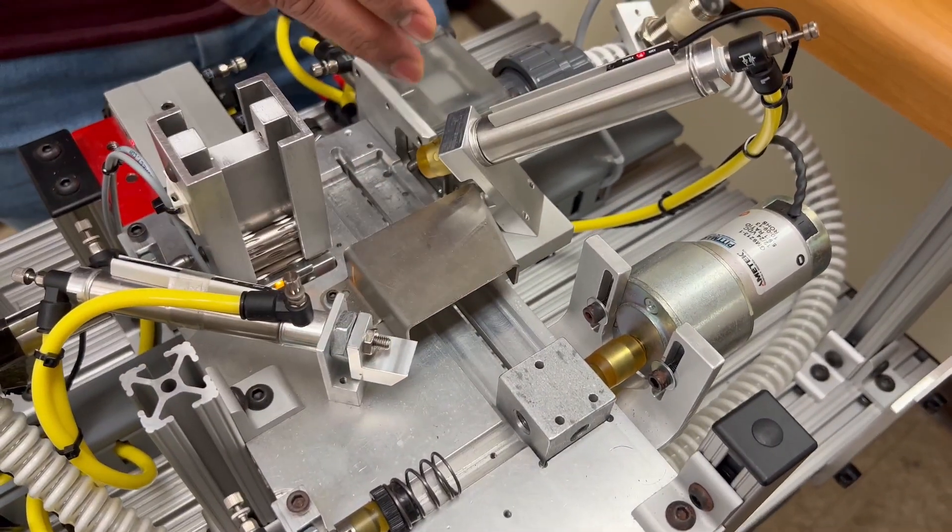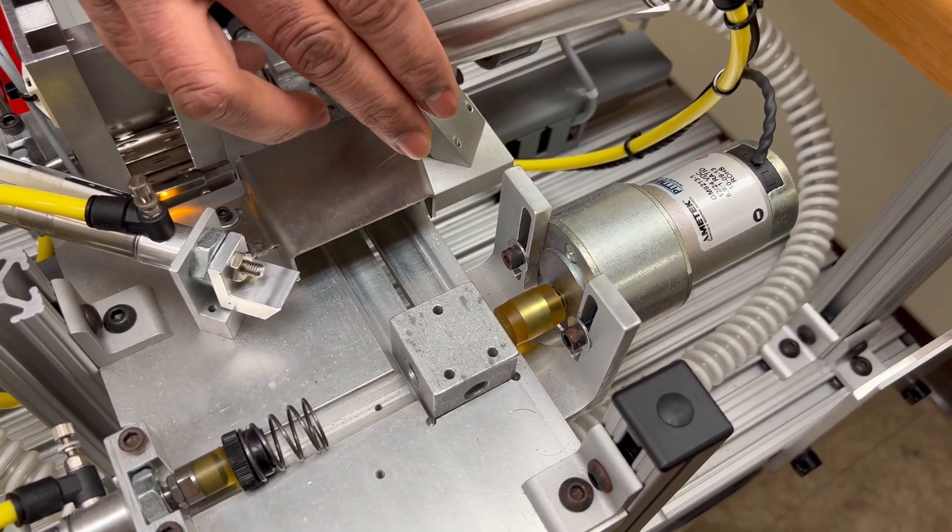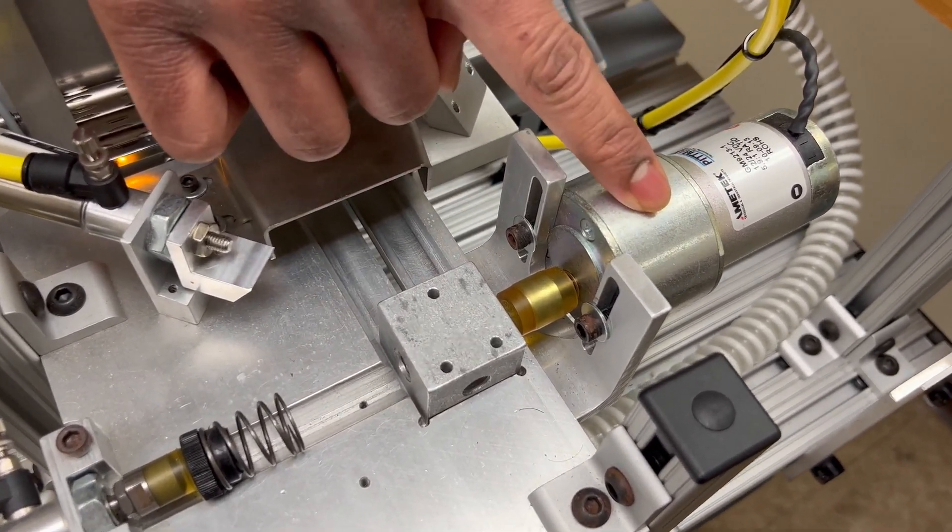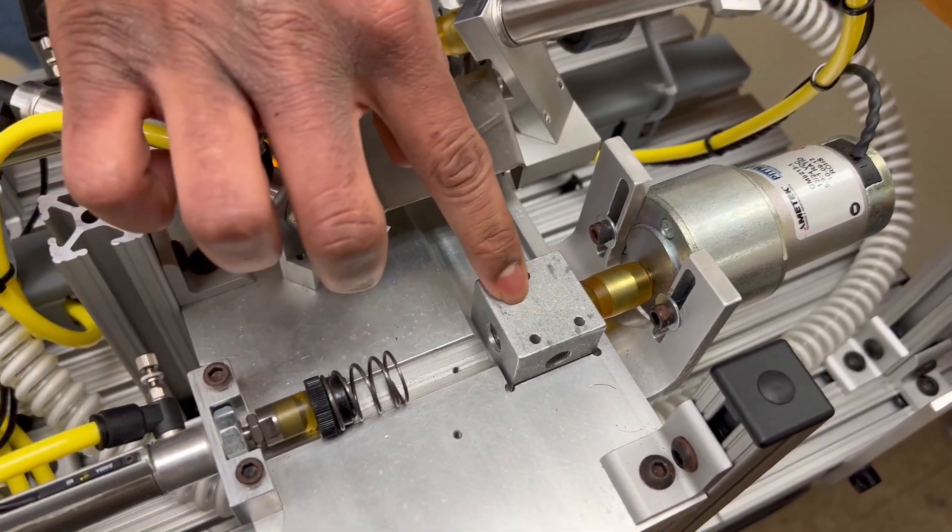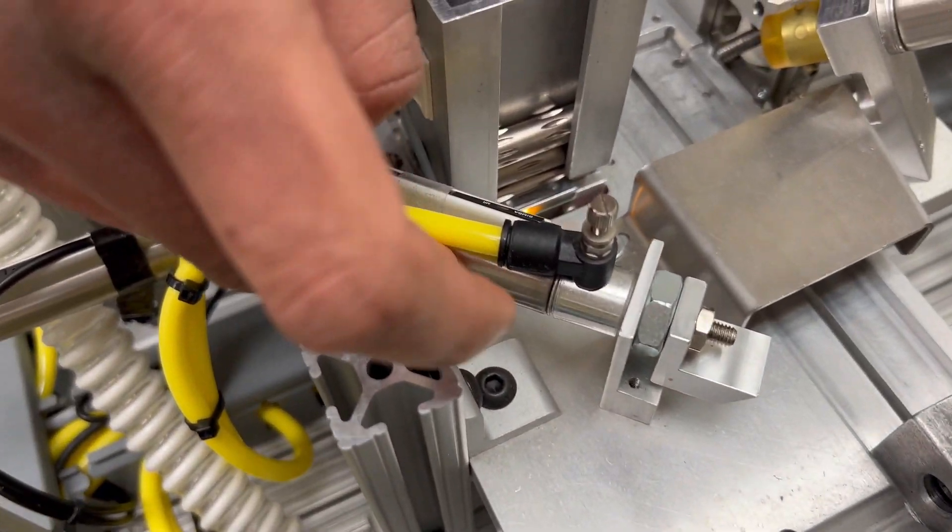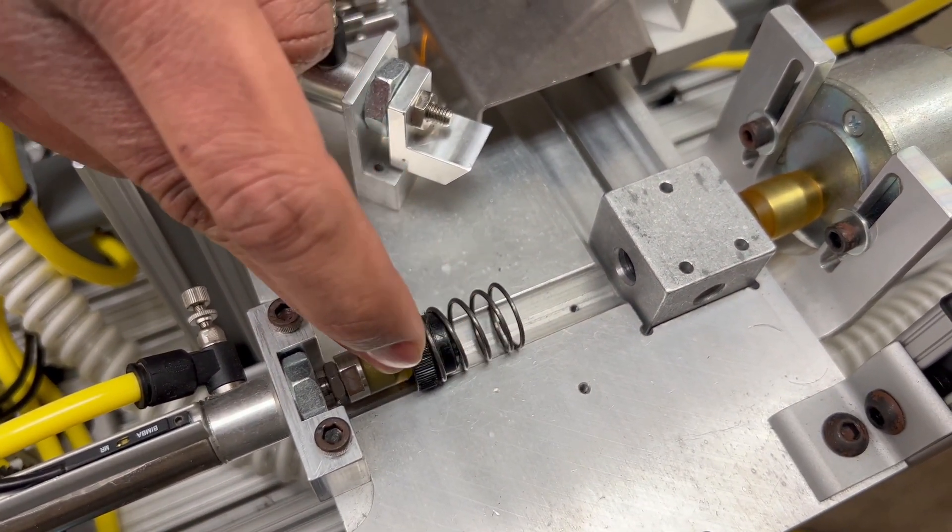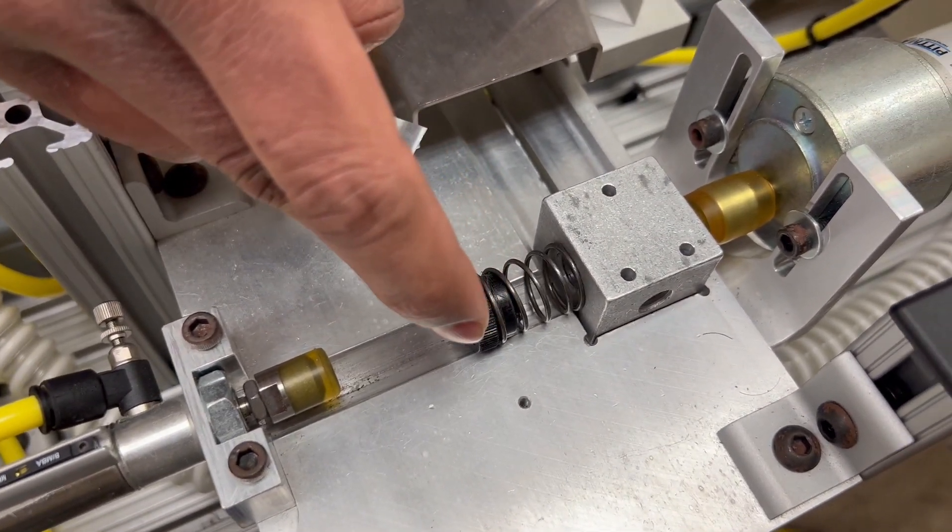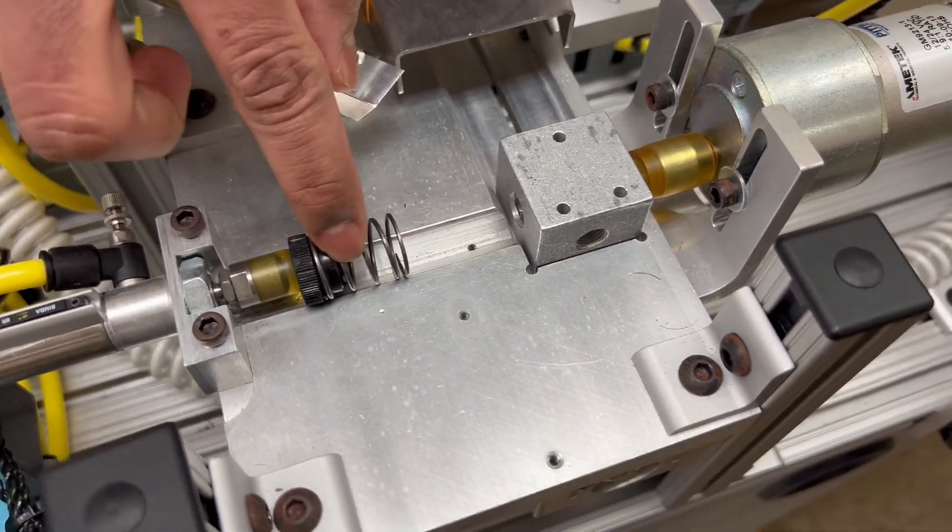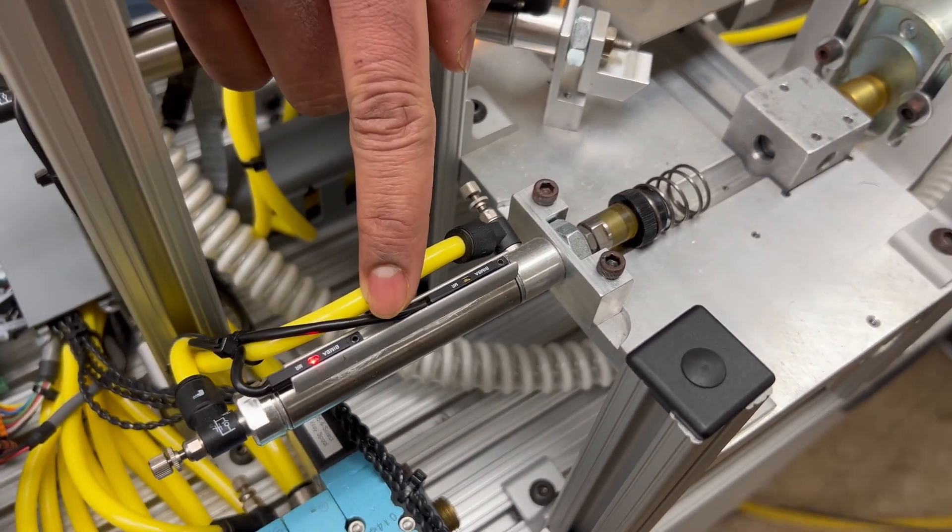And the screwing operation is performed by this DC motor and this part is also held in place using another cylinder over here. And we have a spring that is used to complete the assembly and this screw is pushed using another cylinder which also has a magnetic reed sensor.